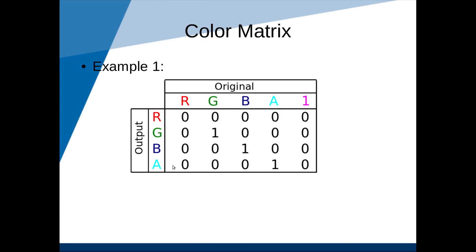Now, what do you think a matrix like this would do? Pause the video if you want to think about it. The solution: in this example, all the red is removed. Looking at the first row, it's 0 times red, plus 0, plus 0, plus 0, plus 0 — equal to 0. There will be no red in the output image. The new green is 0 of original red, plus 1 times original green, plus 0, plus 0 — so green stays. The new blue is 0 plus 0 plus the old blue. The new alpha is 0 plus 0 plus 0 plus the old alpha.